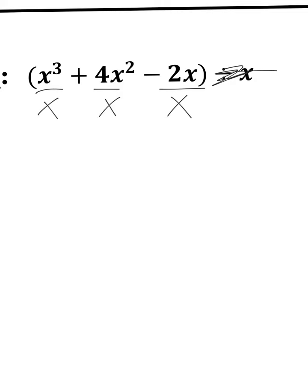So remember, when you divide with exponents, you need to subtract the powers. So basically, what I'm doing is dividing by x to the first power. So I have x to the third divided by x to the first power. So 3 minus 1 is 2. So I have x squared left over.